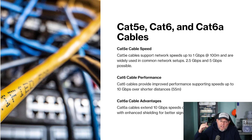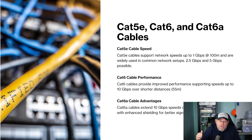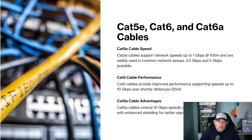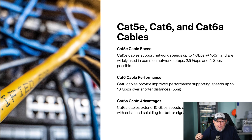Cat5e is going to be the least expensive — unless it needs to be plenum rated, but that is true with all of these. So Cat5e, Cat6, Cat6a — you can go out and just do an Amazon search for the cable and see the pricing, the difference in how the cables are structured, and the speeds. This is a snapshot of what we deal with the most besides fiber; these three cabling types are what we use the most outside of fiber.